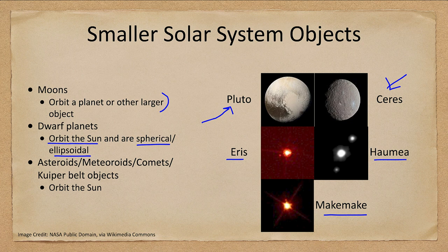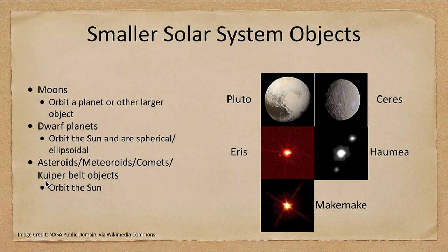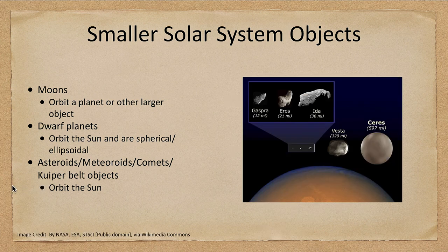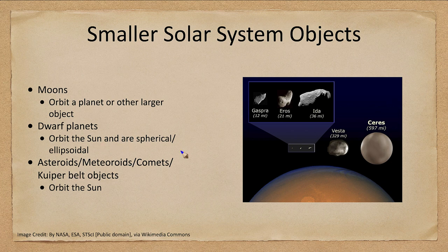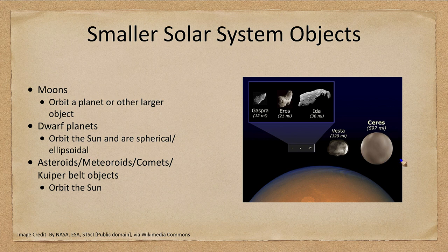Now there are also a lot more small objects. We have the asteroids, meteoroids, and comets. We see some of the asteroids here. Several of them have been imaged and we have actually gotten relatively close-up images of.